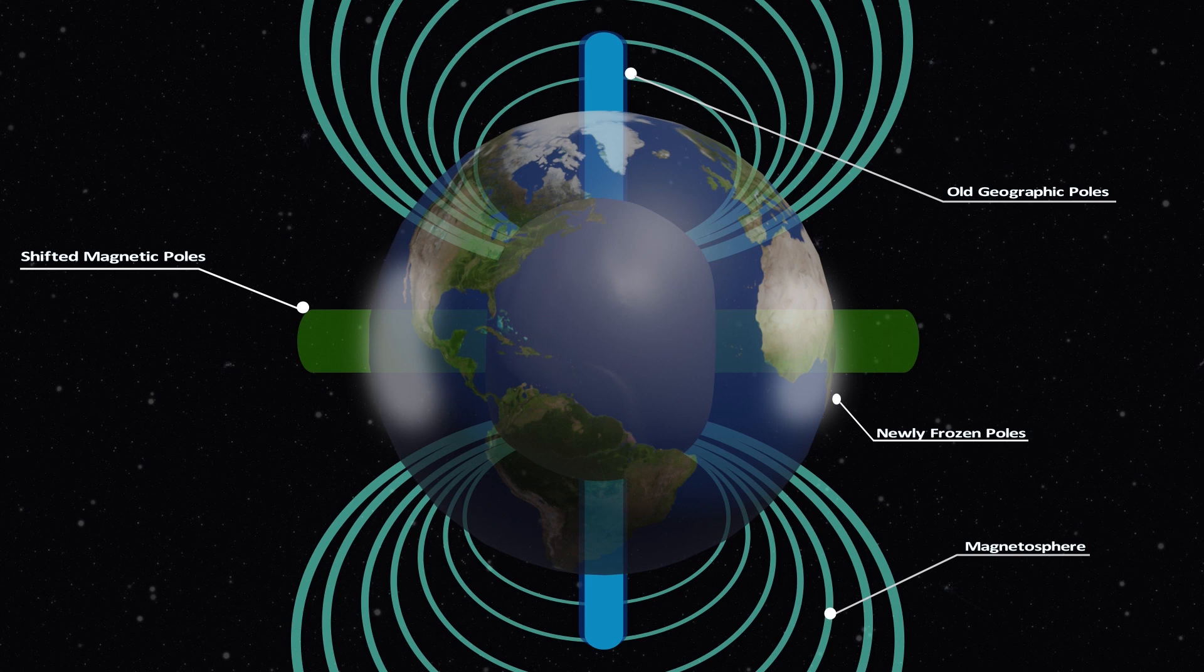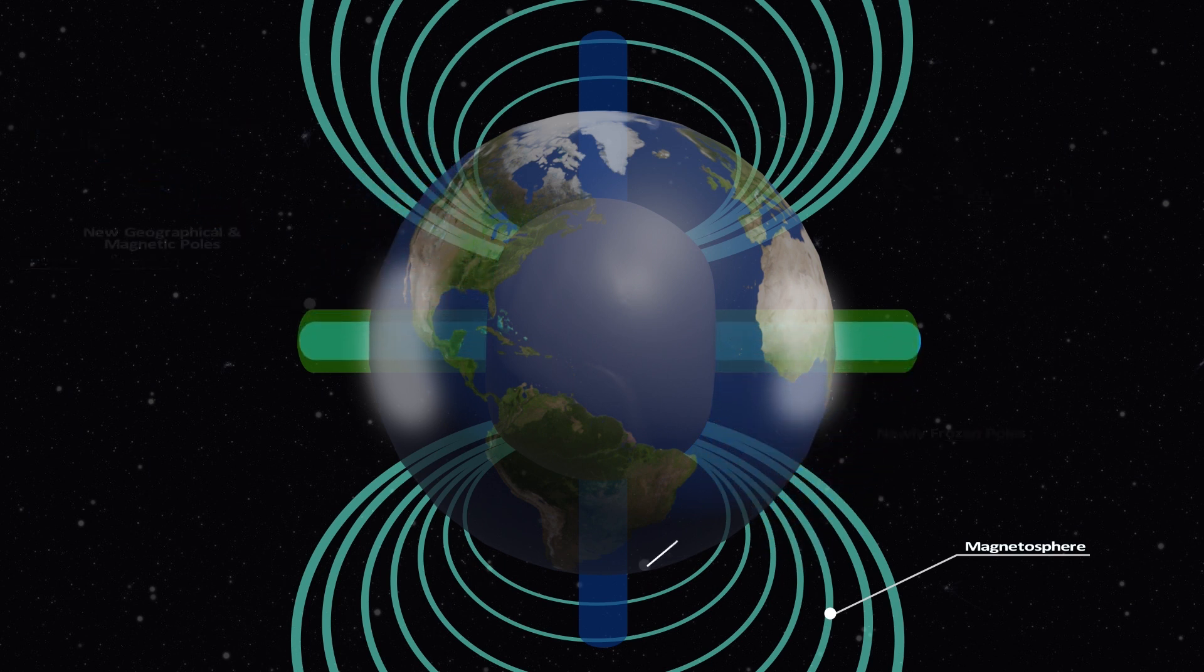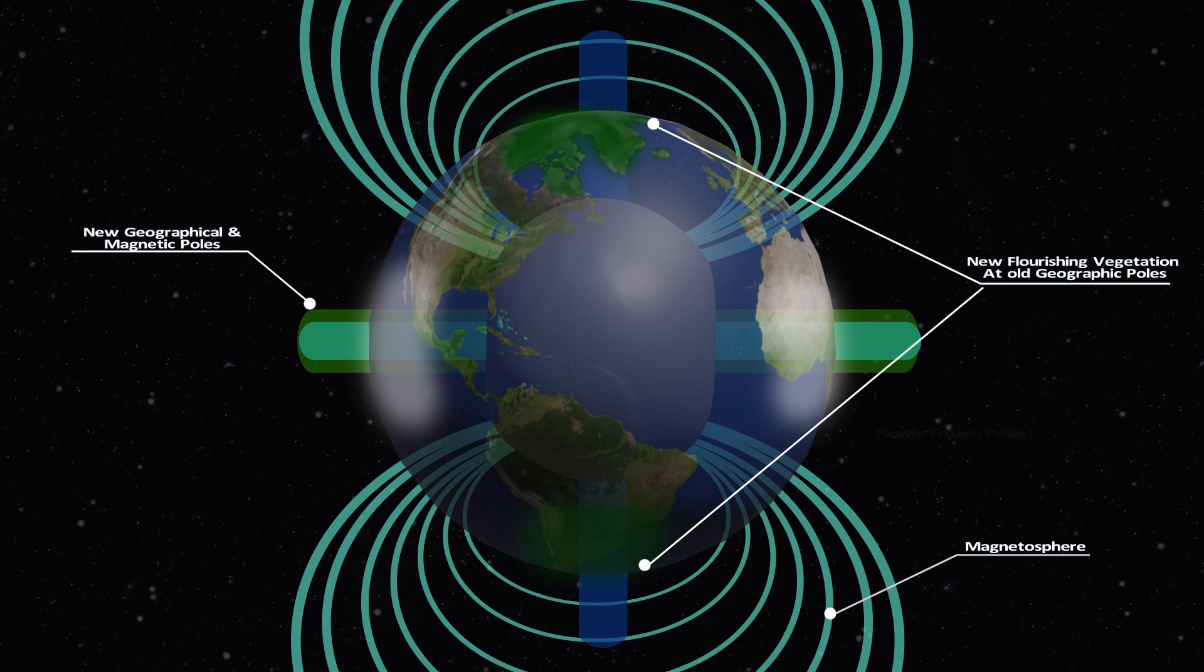So the magnetic pole shift would cause a mini ice age, because the location where the magnetic poles would shift to and settle at would eventually become the new geographic poles. Due to the toroidal-shaped magnetosphere shifting with the magnetic poles,